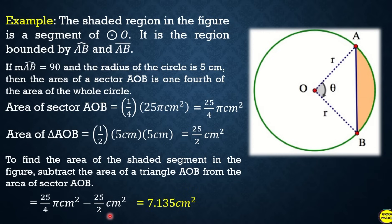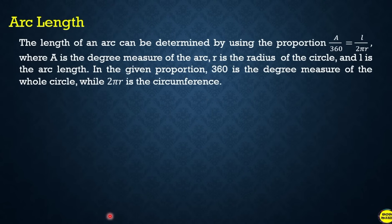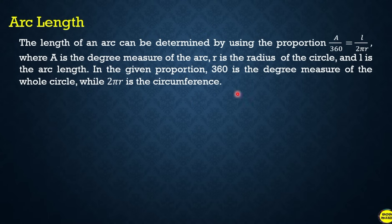Arc length: the length of an arc can be determined using the proportion a/360 = l/(2πr), where 'a' is the degree measure of the arc, 'r' is the radius of the circle, and 'l' is the arc length. In this proportion, 360 is the degree measure of the whole circle, while 2πr is the circumference.